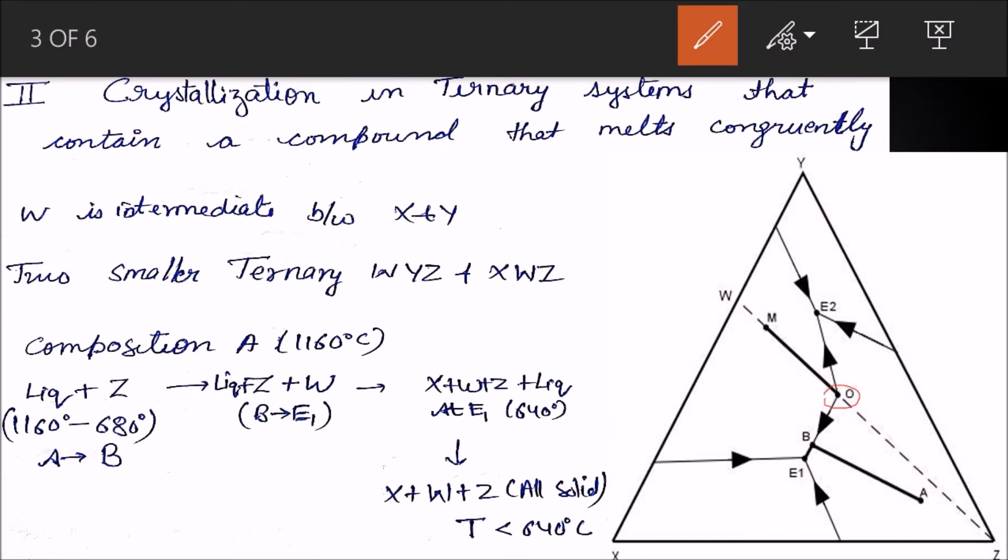It starts from M, moves in this direction, reaches point O, and crystallization stops. This will be equivalent to binary eutectic in the system WZ. This O point will be equal to binary eutectic of WZ system, and final crystals will have only W and Z as crystals.